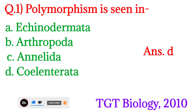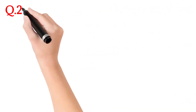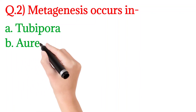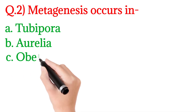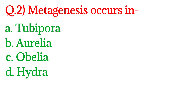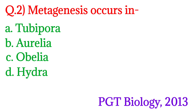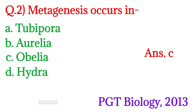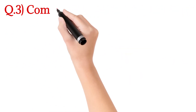Next, question number 2: Metagenesis occurs in — metagenesis पाया जाता है। Option A is Tubipora, Option B is Aurelia, Option C is Obelia, and Option D is Hydra. यह question PGT Biology 2013 में पूछा गया था। इसका answer होगा Option number C — Obelia. Obelia में metagenesis पाया जाता है।